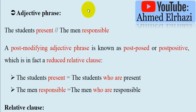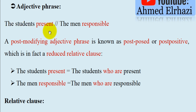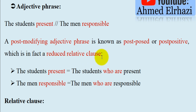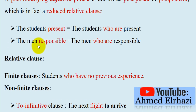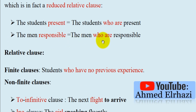The second form is an adjective phrase used as a post-modifier. Examples: the students present; the men responsible. A post-modifying adjective phrase is also known as post-positive or predicative post-modifier — these are all the same thing. These are in fact reduced relative clauses. For example, 'the students present' originally was 'the students who are present', and 'the men responsible' originally was 'the men who are responsible'.